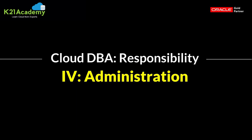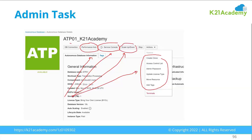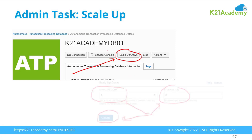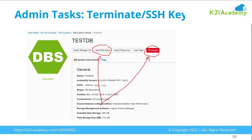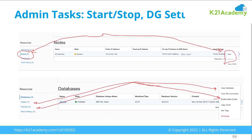Once you have the connectivity understanding, the other core responsibility of DBAs is administration. You'll be looking at performance tuning using the Performance Hub or service console in autonomous databases. You'll be doing scale up or scale down of services — scaling CPU, disk space, or memory. You'll be creating clones, doing access control, and resetting passwords. Other admin tasks include adding SSH keys, terminating databases, and starting or stopping the database or the Linux machine on which the database runs.